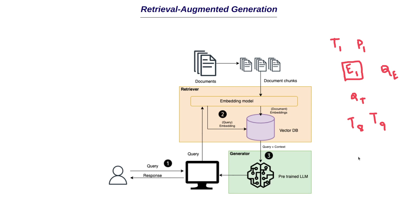This is how the retrieval augmented generation framework works: split documents into chunks, embed them into a vector database, embed the query using an embedding model, perform a similarity search, identify the relevant chunks, and pass only that specific text — not the entire document — to the generator, which answers the question. For example, if you're working with updated library documentation that the model doesn't know about, it can now answer your question using that updated information. This is a widely used pattern in the industry.